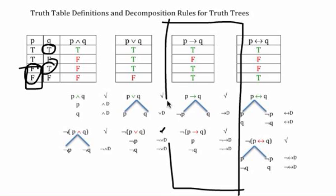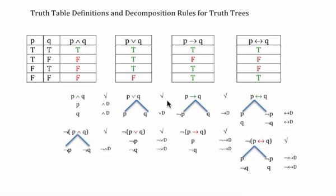Because the conditional decomposition rule branches, the negated conditional decomposition rule stacks. There is only one way for a conditional statement to be false: a true antecedent and a false consequent. So for the negated conditional to be true, we stack p on top of not-q, justify each by reference to the negated conditional decomposition rule, and check it off. We have graphically represented the truth conditions without using the two-place operator we started with.